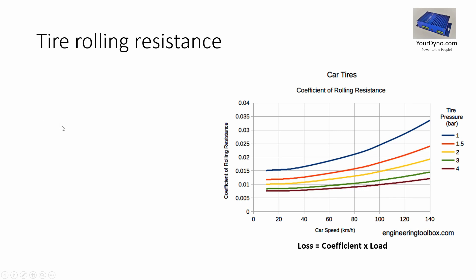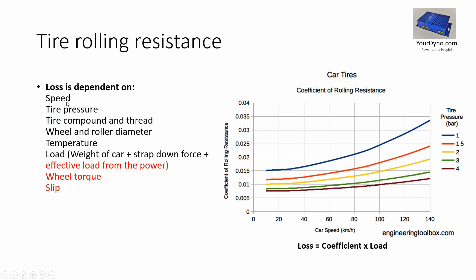Let's put all the factors together, because there are a bit more than what I just mentioned. The loss is dependent upon speed — clearly, in some complex fashion. It's dependent on tire pressure, very clearly. Another component is the tire compound and the tread, which also makes a difference. Wheel and roller diameter makes a difference as well — smaller rollers mean more loss. Temperature is another one: a little bit higher temperature in the tires means less loss, up to a certain point. And then we have load, which comes in as the weight of the car on those driven wheels, plus the strap-down force — so the harder you strap down the car, the more tire loss you will have.